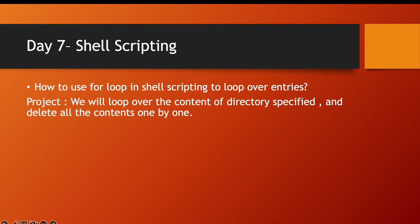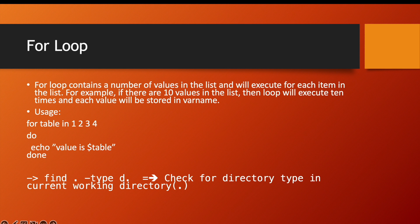The project for today is: we will loop over the content of a specified directory and delete the contents one by one. Now let us understand theoretically how to use a for loop. A for loop contains a number of values in a list and will execute for each item in the list. For example, if there are ten values the loop executes ten times, and each value is stored in a variable. For example: for variable name in 1 2 3 4; do echo $variable; done — and to close the for loop we use 'done'.